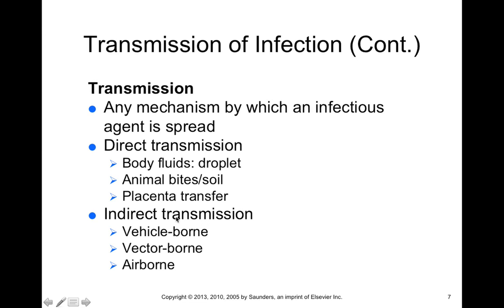There is also indirect transmission due to exposure to vehicle-borne microorganisms. Microorganisms might piggyback on a fomite, like a doorknob. There are vector-borne transmissions where mosquitoes carry an infectious microorganism, and by being bitten you are indirectly exposed. There is also airborne transmission where a microorganism that is aerosolized or floating in the environment represents another mode of indirect transmission.